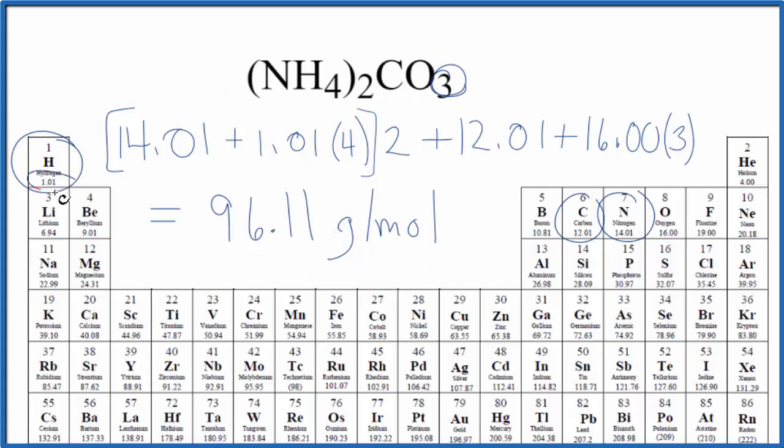Note that my periodic table rounds to two decimal places. If your periodic table rounds more or less, you might get a slightly different number here. This is Dr. B with the molar mass for (NH4)2CO3, ammonium carbonate. Thanks for watching.